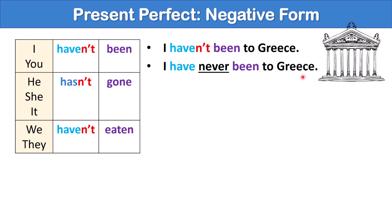Notice when we use the word never, we do not put not after have. You can't say, I haven't never been to Greece. That's a double negative, and that is considered incorrect in English. So you can say, I haven't been to Greece, or I have never been to Greece. Essentially, these mean the same thing.